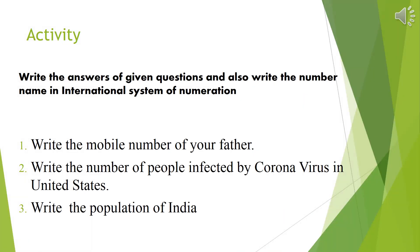Here is an activity for you. Some questions are given — find the answers and write the number name in words in the international system of numeration. First question: write the mobile number of your father and write it in words. Second question: write the number of people infected by coronavirus in the United States — you can find this answer through the media — and write that number in words. Third question: find out the population of India and write the number name.